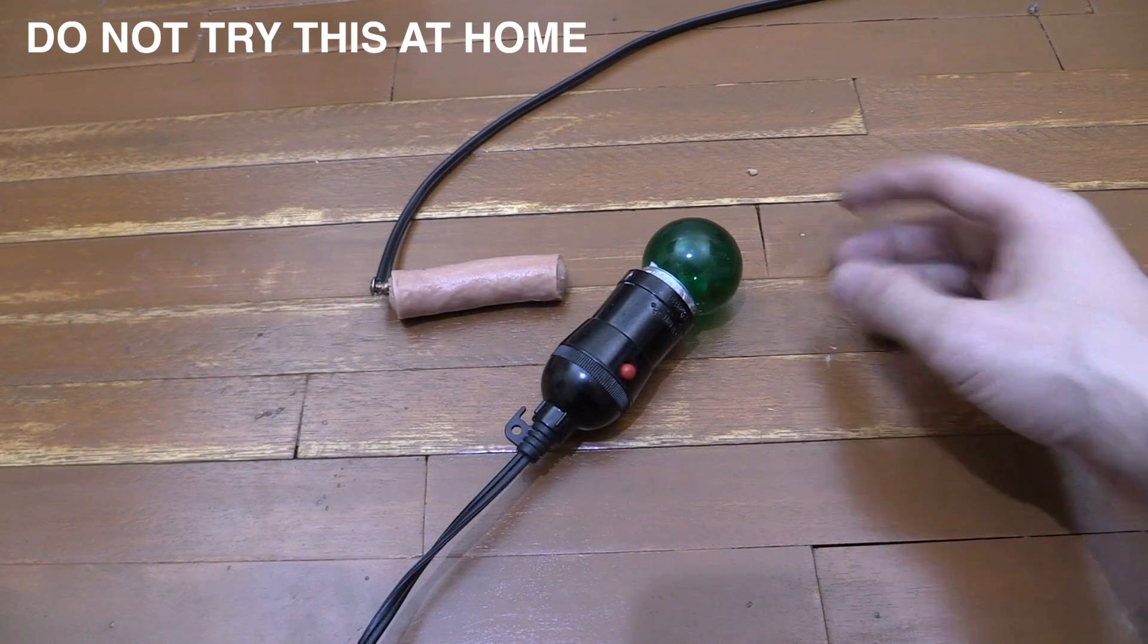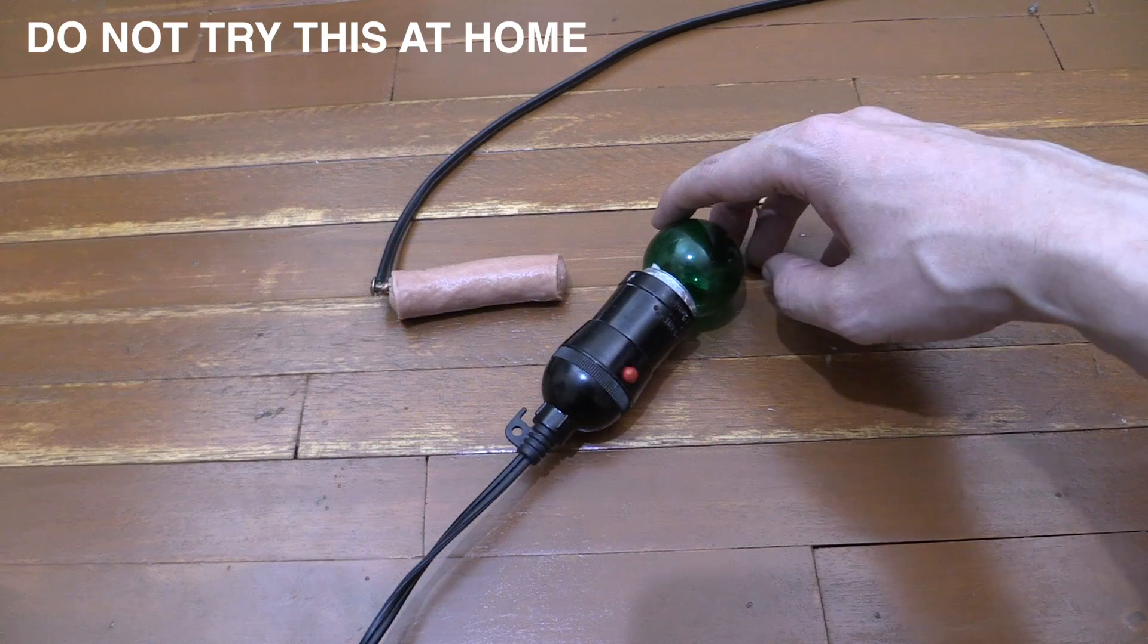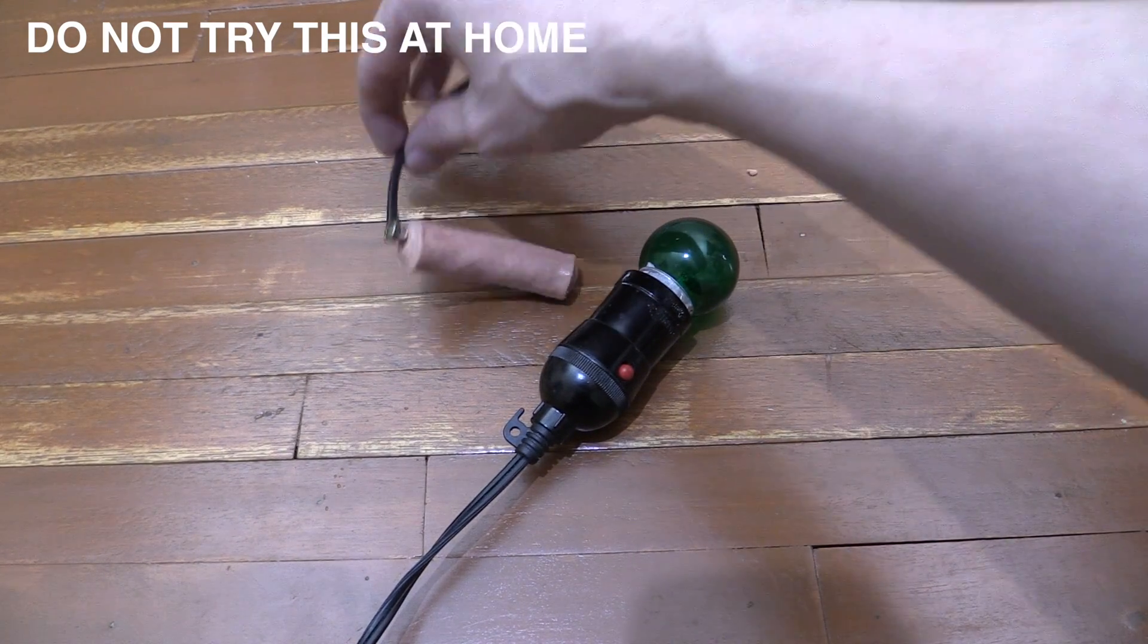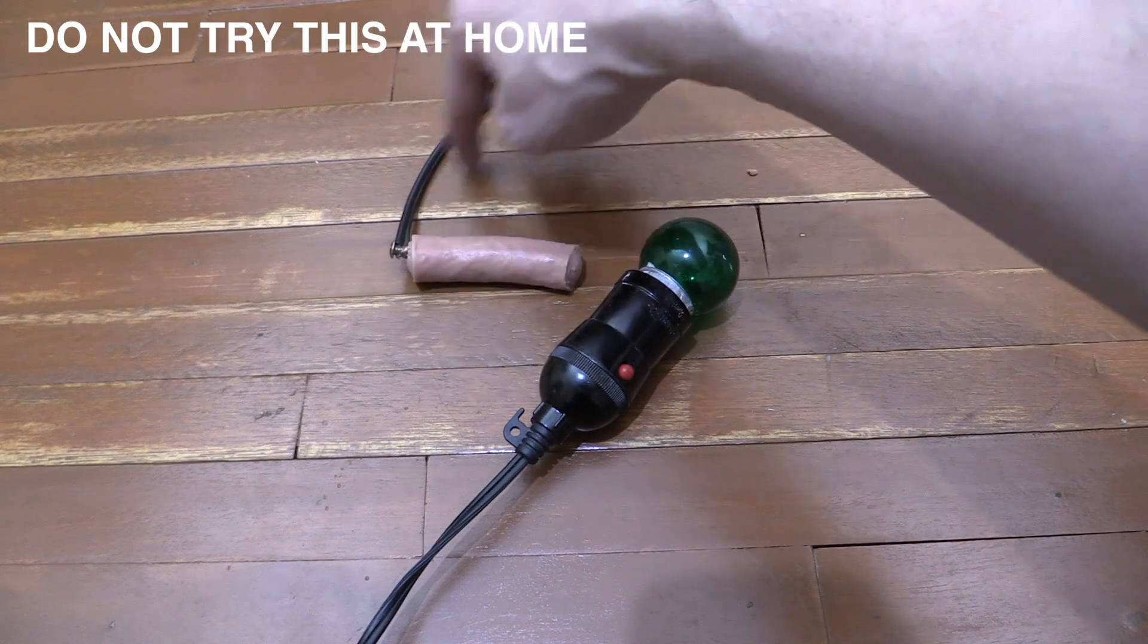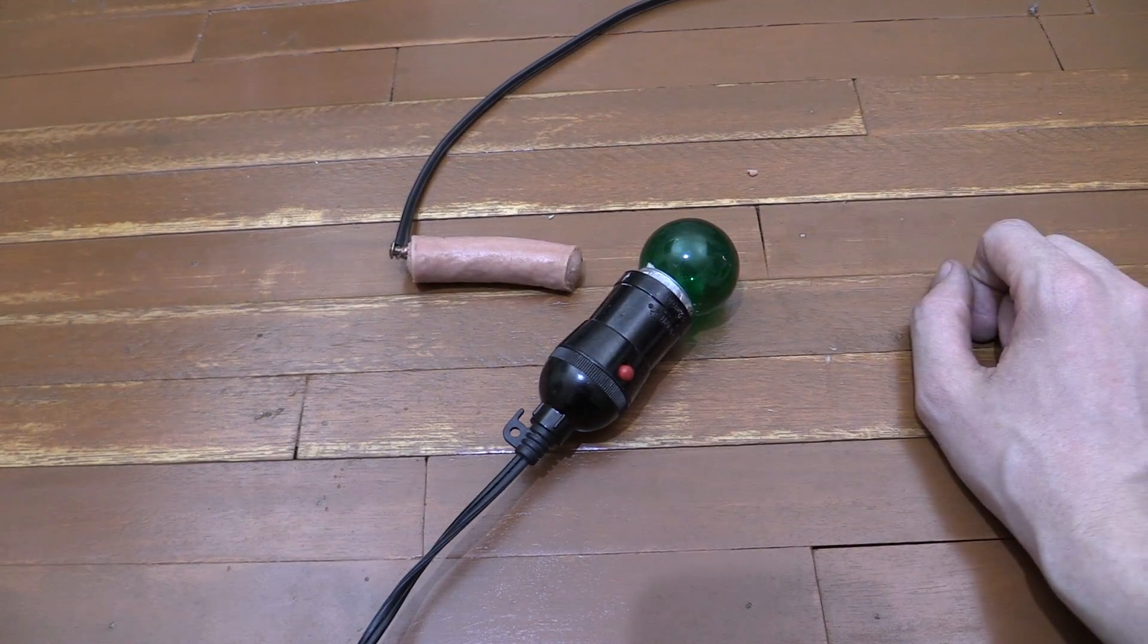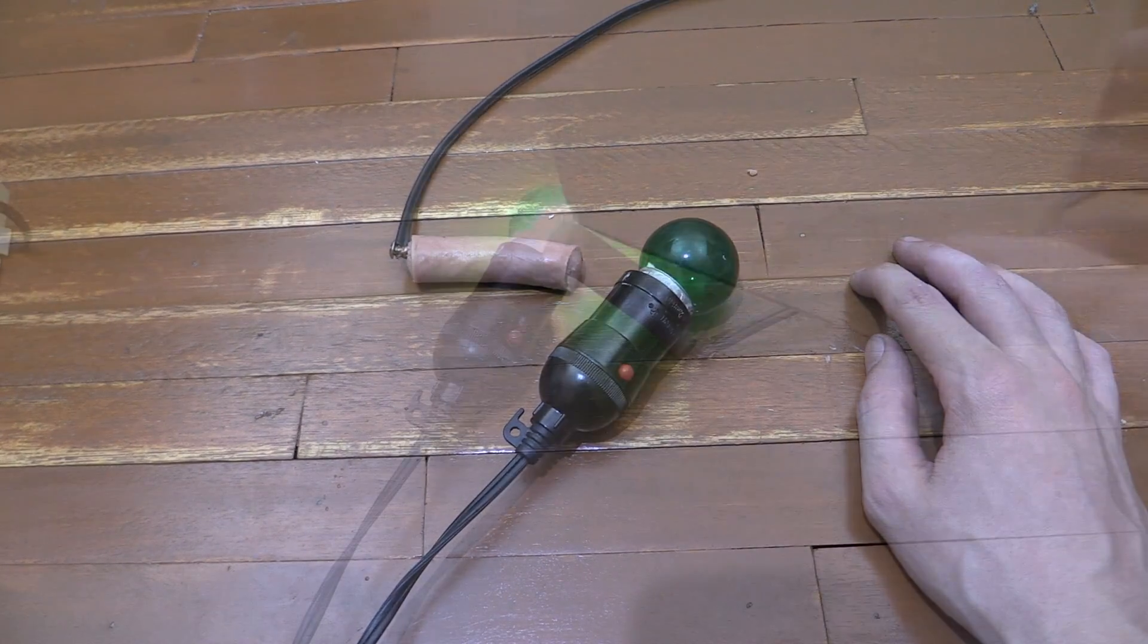So we're going to do a real-life test now. This is the bulb holder where I had the shock before from touching the metal. Instead of using my finger, we're going to test with a hot dog and I do have a wire going into that. That's just ground, so basically I've grounded the hot dog just like it was a human finger. So let's see what happens when we don't have any GFCI protection.